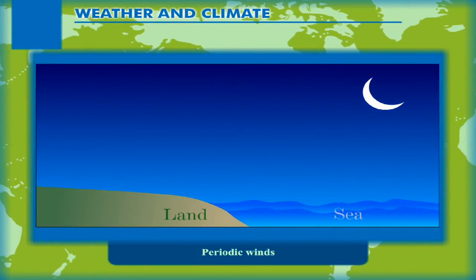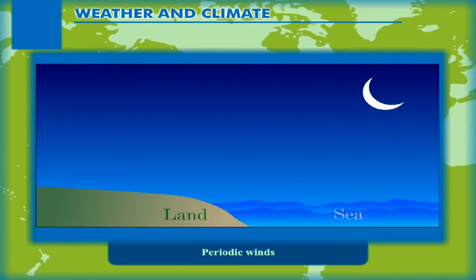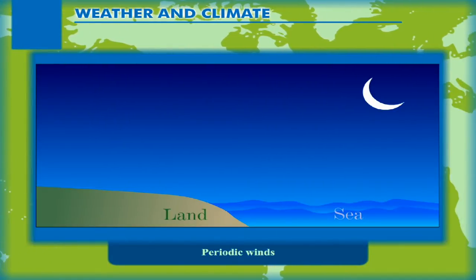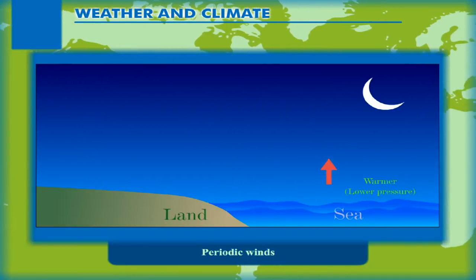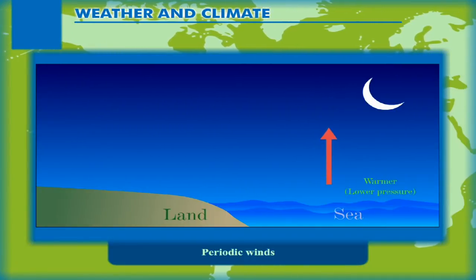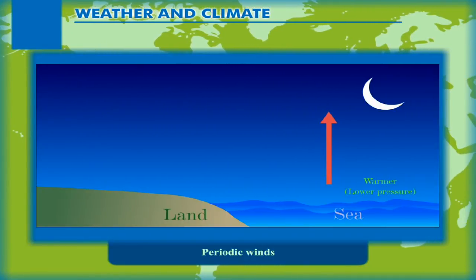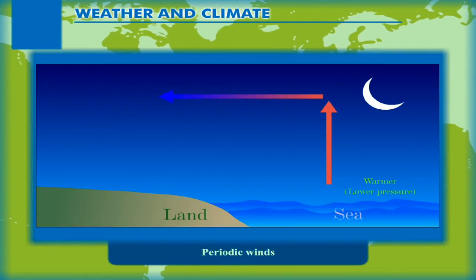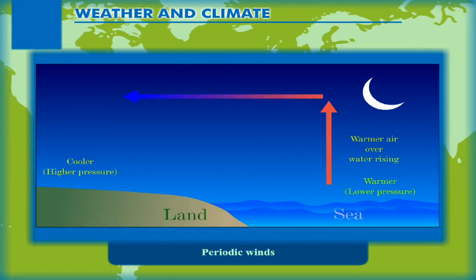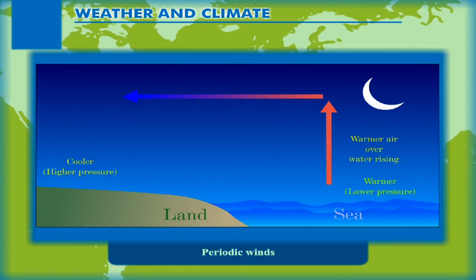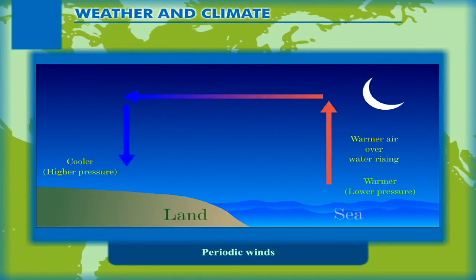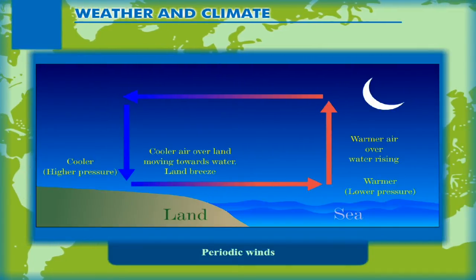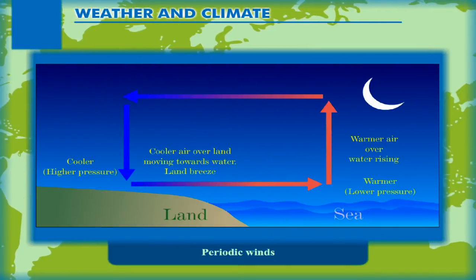At night, the land cools down much faster than the sea. The air above the sea is warmer and lighter. The warm air above the sea rises, so the pressure above the sea is lower than the pressure above land. Therefore, air from land blows out towards sea. This is known as land breeze.